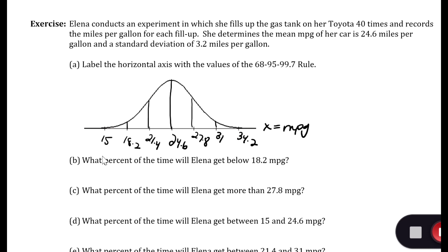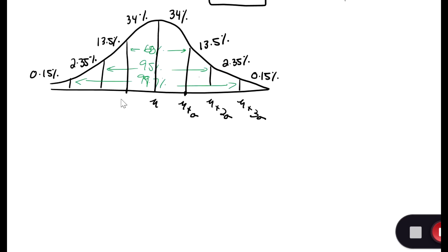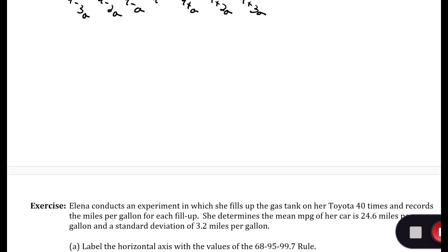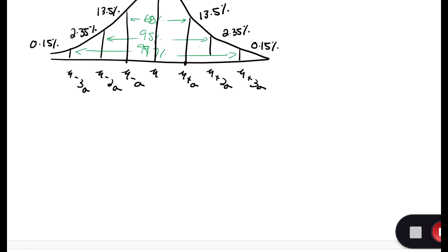We want to know what percentage of the time Elena will get below 18.2 miles per gallon. That is two standard deviations below the mean, so we want the region more than two standard deviations below. That's going to be 2.35 plus 0.15, which equals 2.5%.